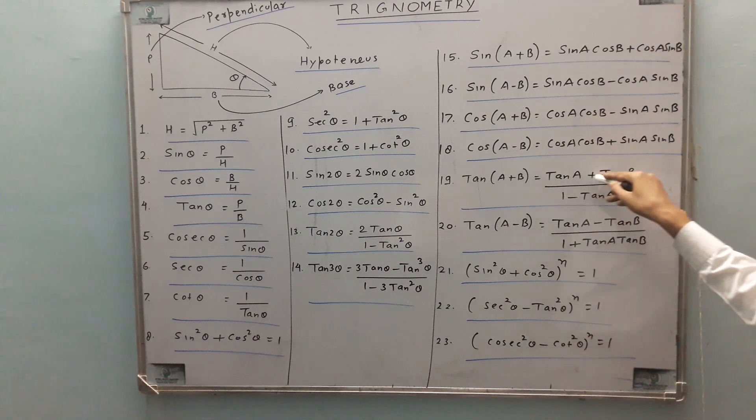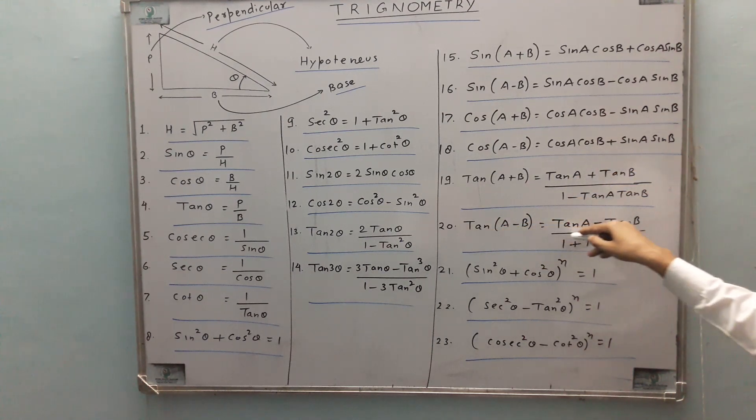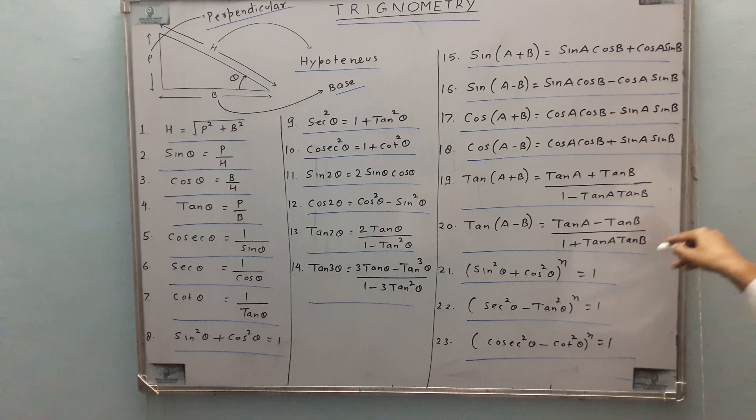19th is tan of a plus b is tan a plus tan b upon 1 minus tan a tan b. 20th is tan of a minus b is tan a minus tan b upon 1 plus tan a tan b.